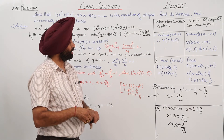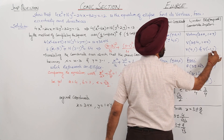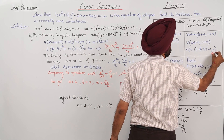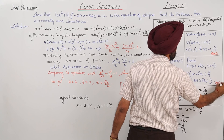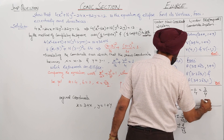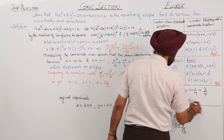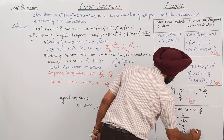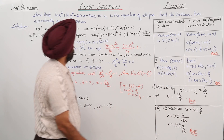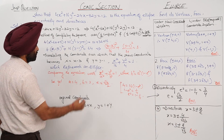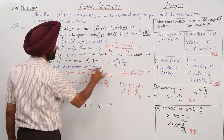So we have found all the required answers: the eccentricity, vertices, foci, and directrices of the ellipse.